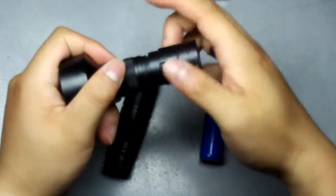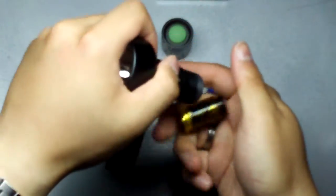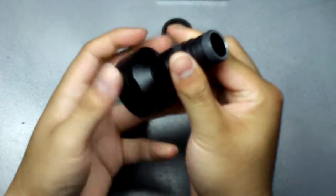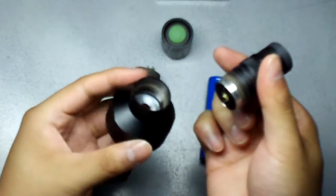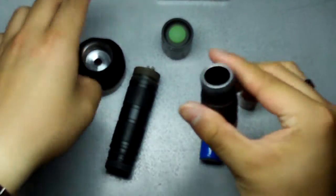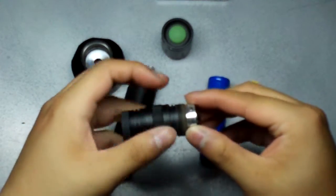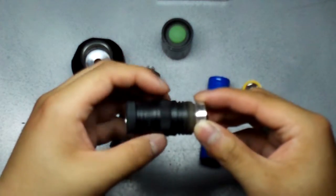But ever since I got 18650s, that's mainly what I've been using the light with. And it's been great. I think runtime is approximately 90 minutes on high with a charged 18650. With a 123A, the runtime is only around 20 minutes.